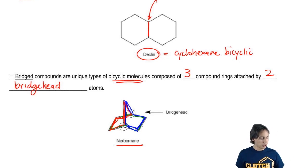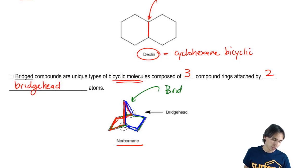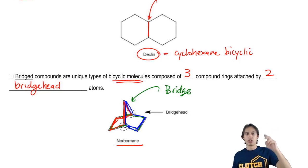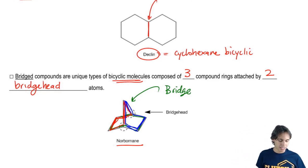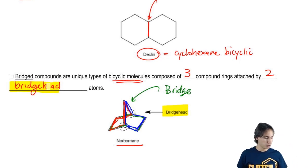This thing in the middle that I keep pointing to is called the bridge. Think about that you're like walking over a bridge and you're going from one side of the molecule to the other. The atoms that attach all of those are called the bridgehead atoms. So that's what I meant by two bridgeheads. This is called a bridged compound.